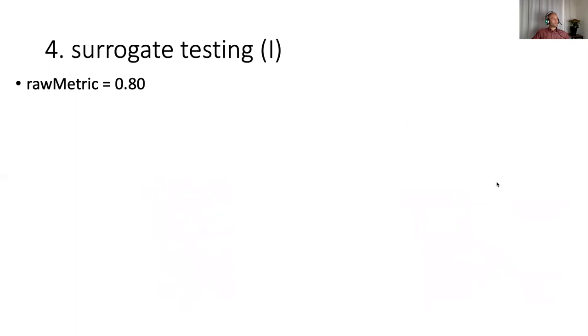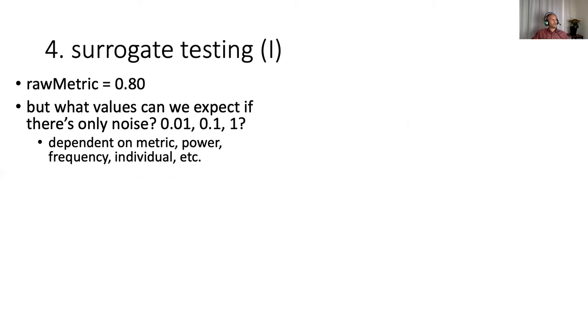My fourth topic is surrogate testing. Imagine you're interested in some advanced form of brain dynamics, and you measure your metric and you get a value of 0.8. Well, that's great, but what does this really mean? Because the problem is that we often don't know what values we can even expect if we only recorded noise. If you just supply noise to your analysis script, it would also come up with a number in the end. So we need to know what the noise level is in order to interpret our raw metric.